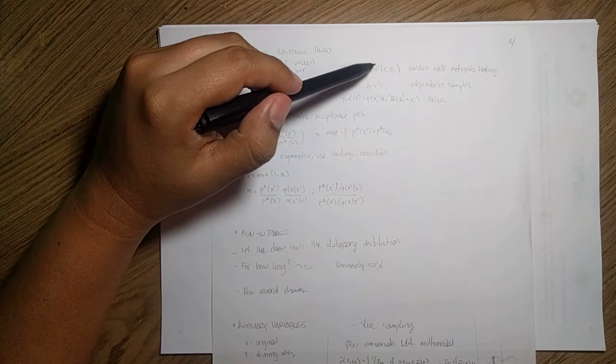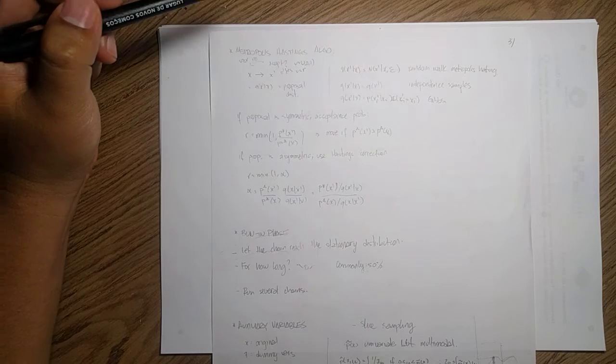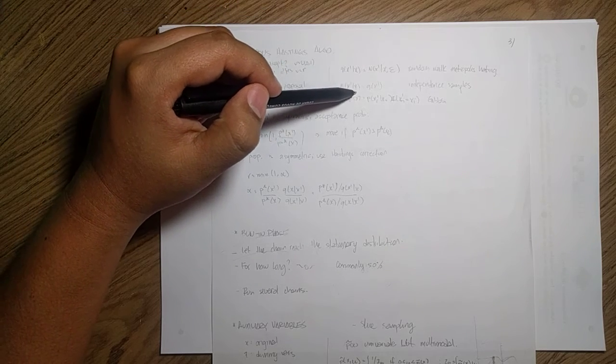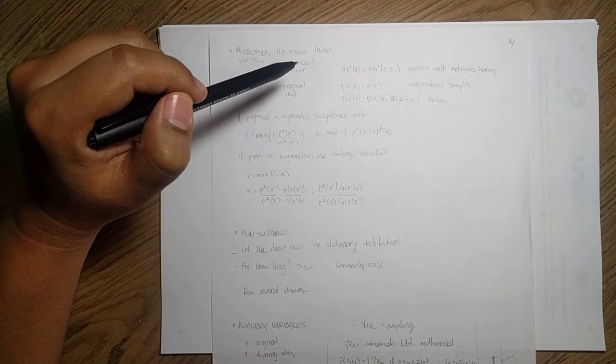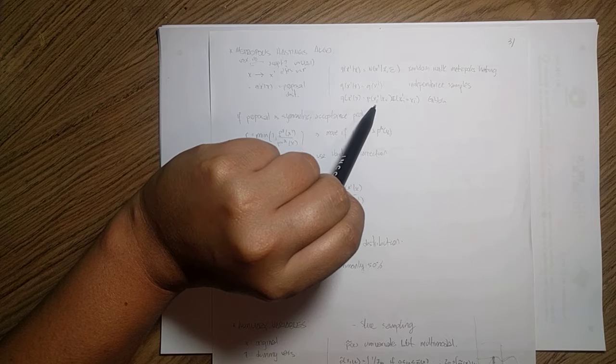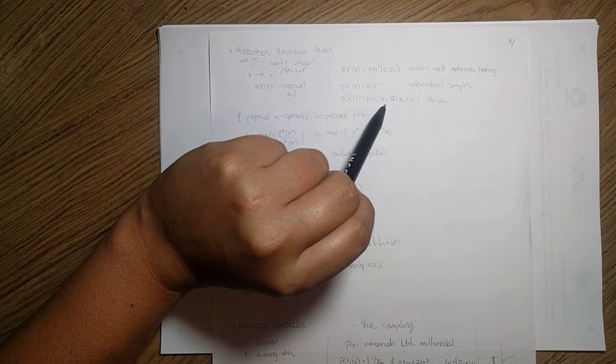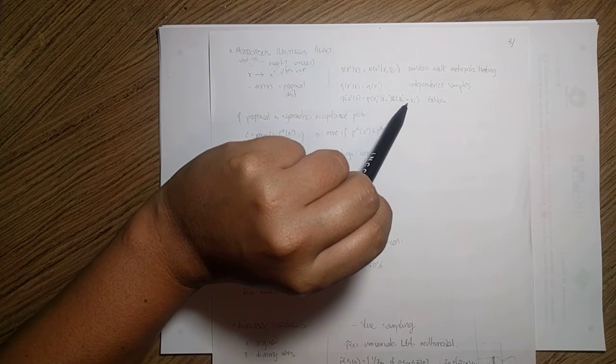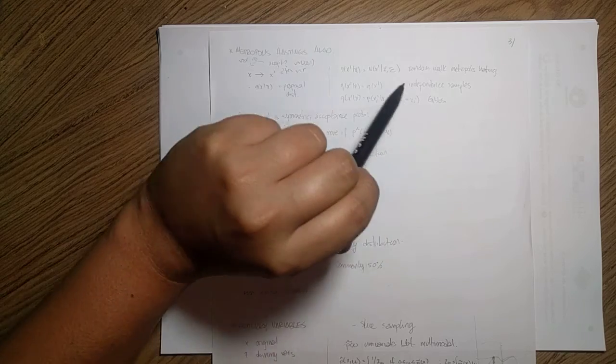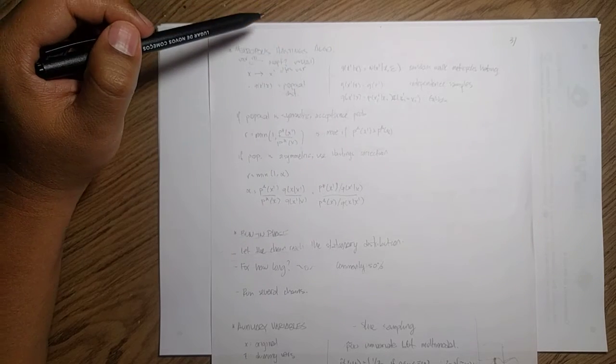For instance, if you use a normal distribution around the current sample or the current state, what you get is a random walk Metropolis-Hastings. Meanwhile, if you use independent samples, that means like your proposal does not depend on X, you get independent sampling algorithm. And when you have some proposal that is the full conditional of the next state that depends on all except the current feature, you get a Gibbs distribution such that you maintain the states between the previous and the next state.